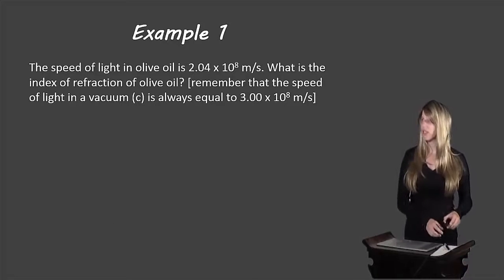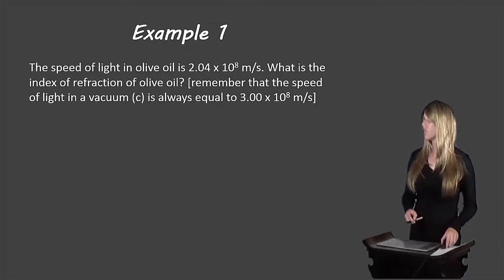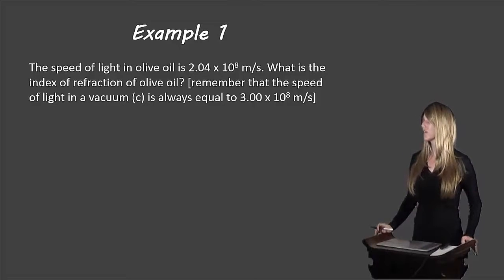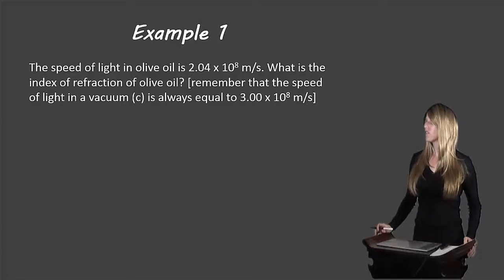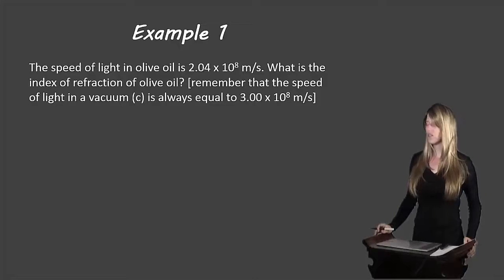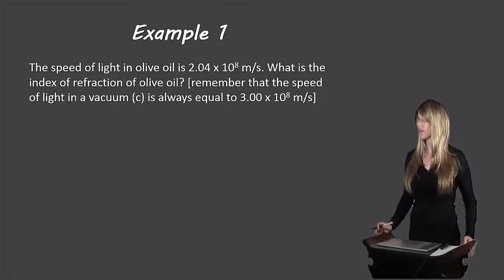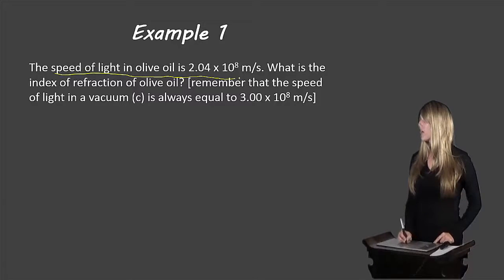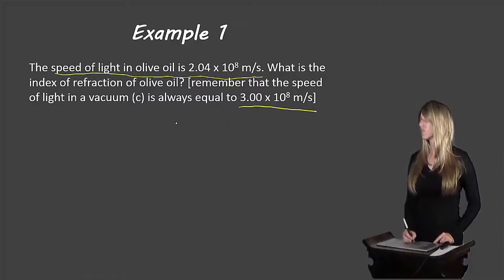So let's take a look at an example here. The speed of light in olive oil is 2.04 times 10 to the 8 meters per second. What is the index of refraction in olive oil? And remember the speed of light in a vacuum, so C, is always 3.00 times 10 to the 8 meters per second. We're given some information here: the speed of light in olive oil is 2.04 times 10 to the 8 meters per second, and C is 3.00 times 10 to the 8 meters per second.